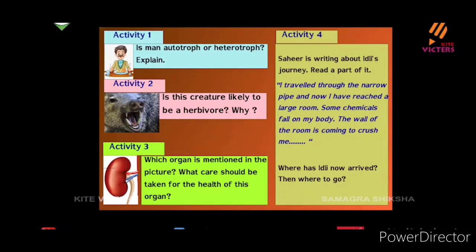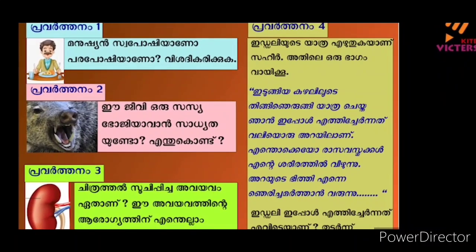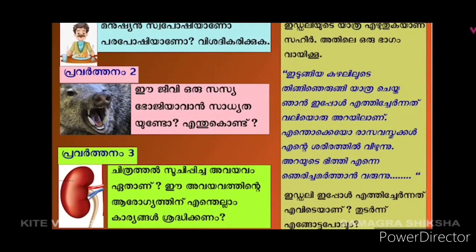I travel through the narrow pipe and now I have reached a large room. Some chemicals fall on my body. The wall of the room is coming to crush me. Where has it now arrived and where to go? I have to go through the narrow pipe. What is the chemical digestion in our body? In chemical digestion, we use the juice in our body.